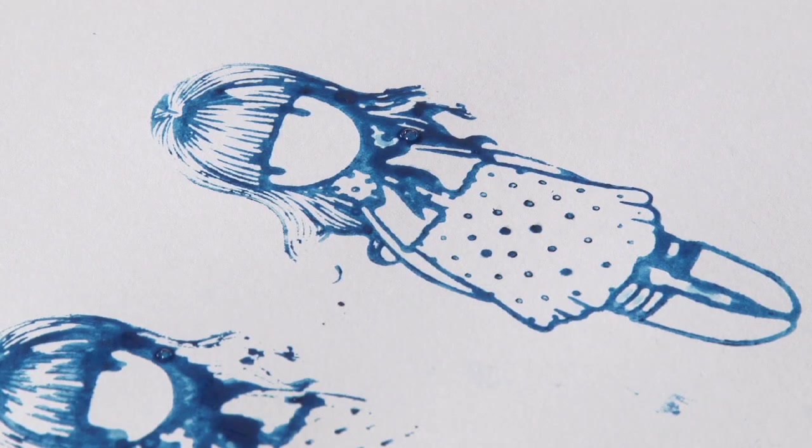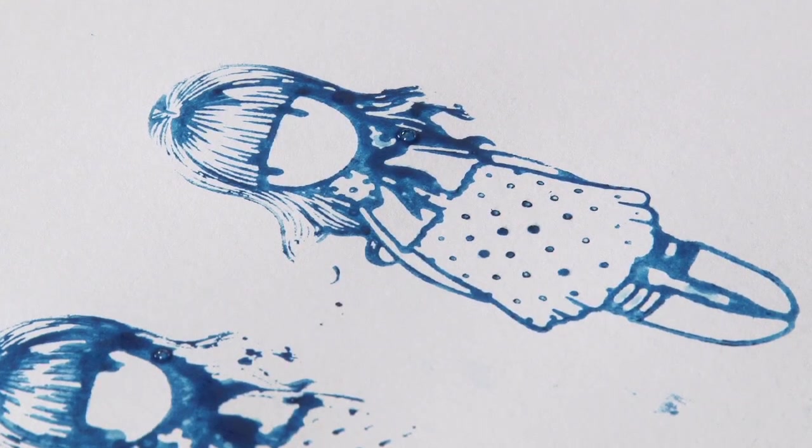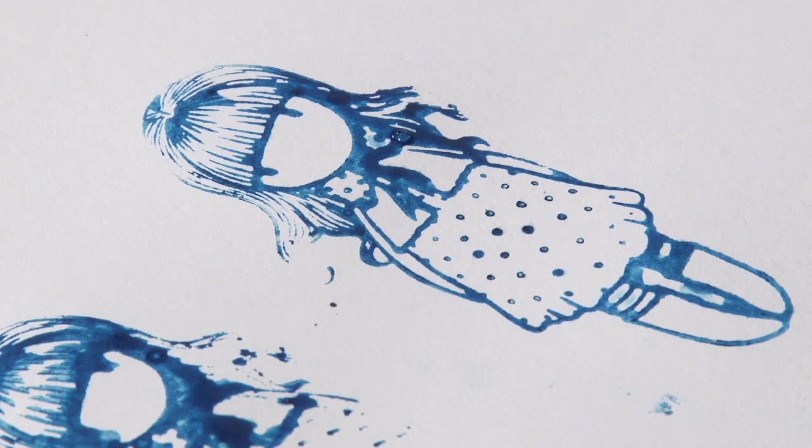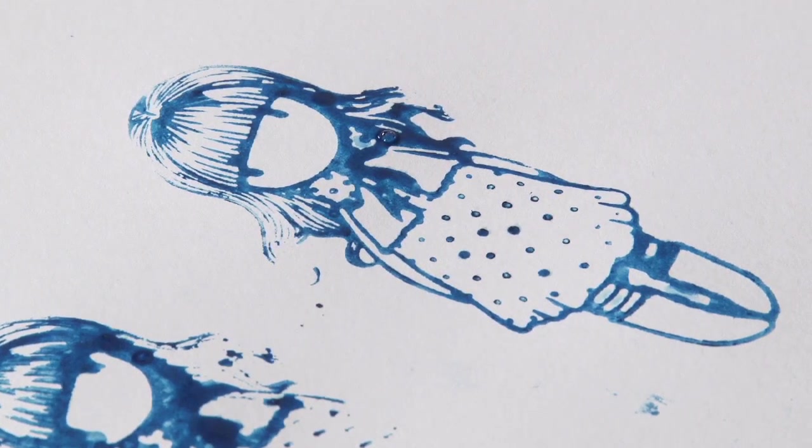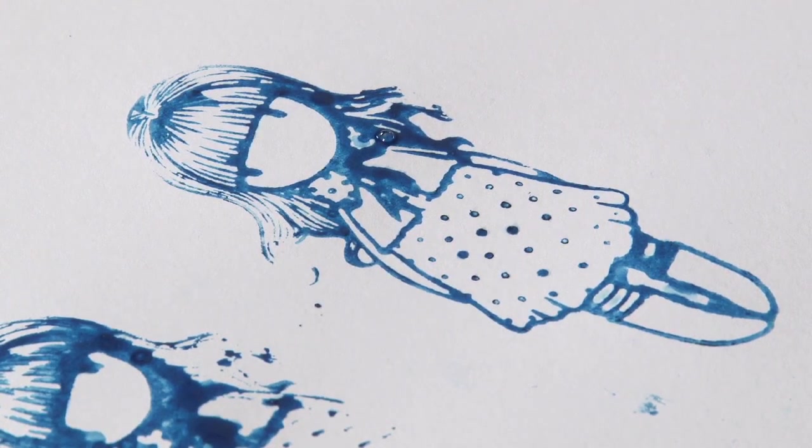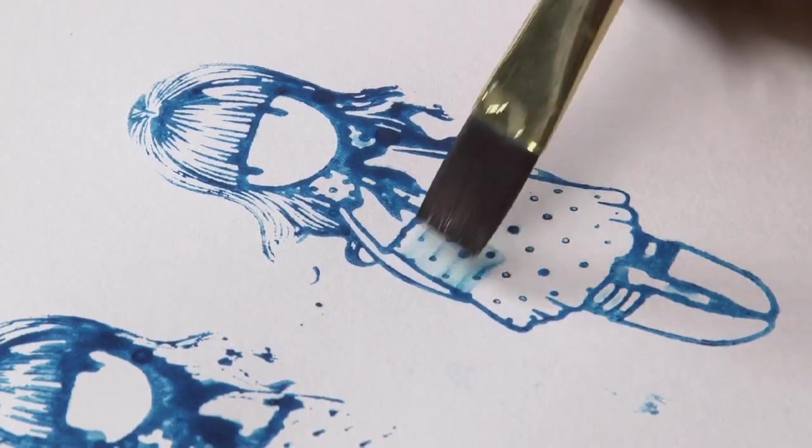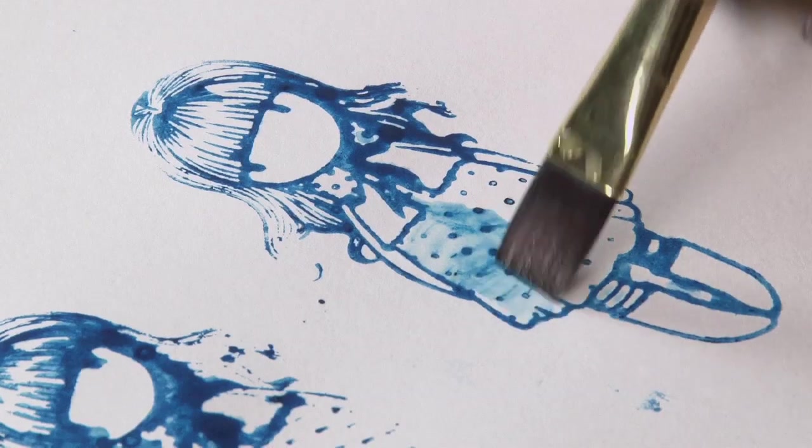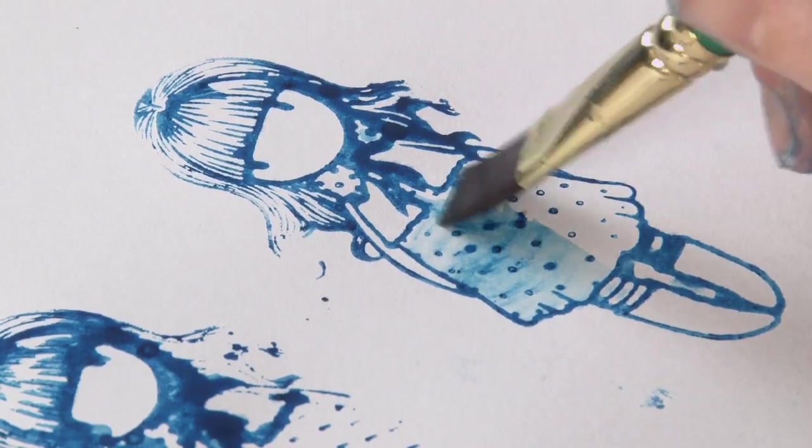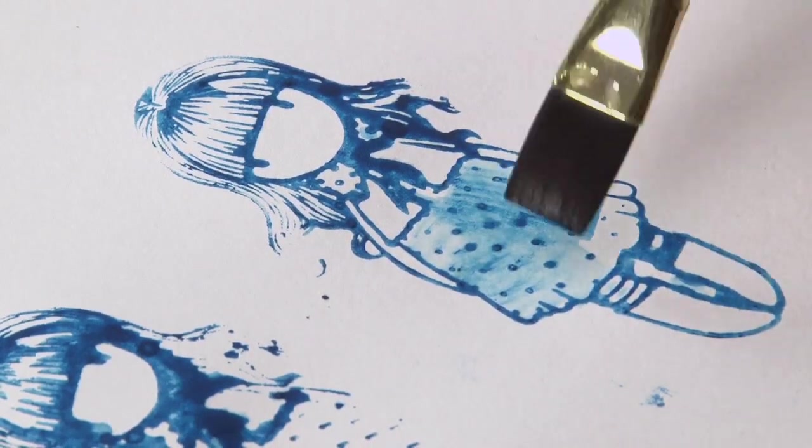You could either leave it until it's totally dry and then color in with colored pencils or other inktense blocks or pencils. Or, whilst it's drying, I might just go in there and drag a little bit of color around on the dress. Really simple to do.